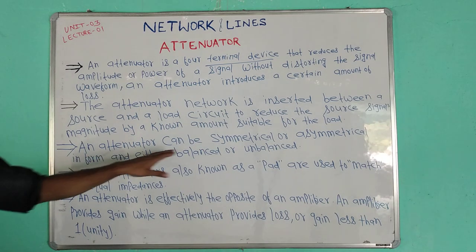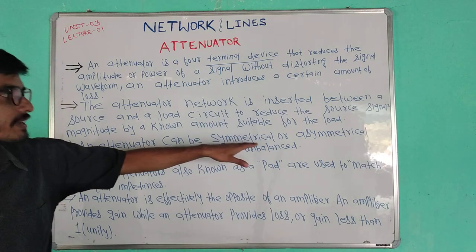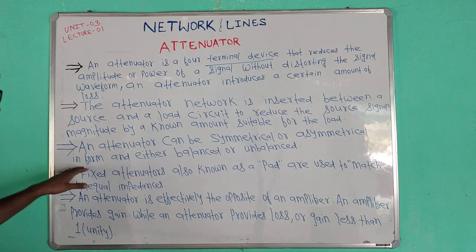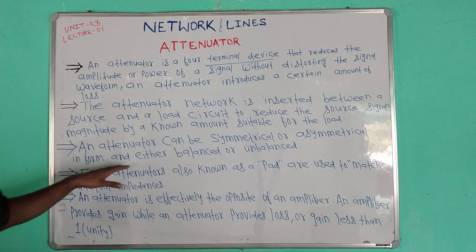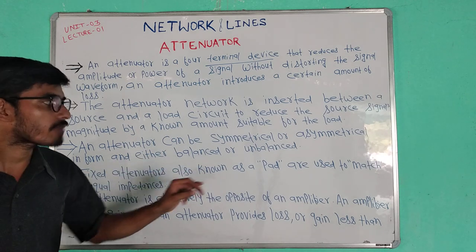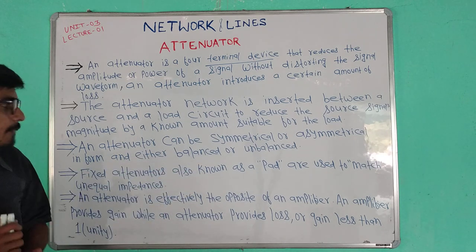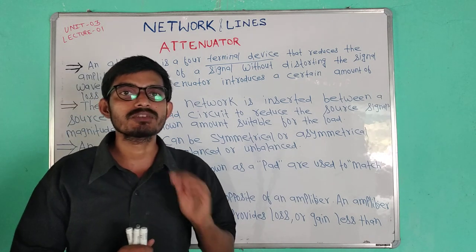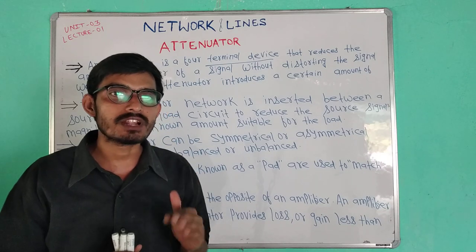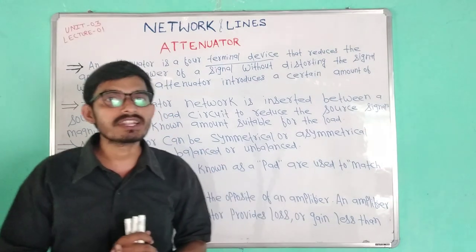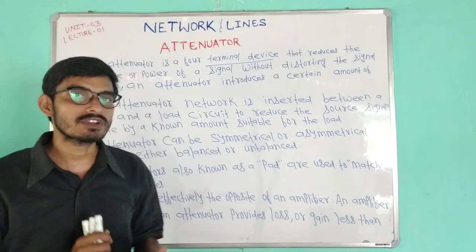An attenuator can be symmetrical or asymmetrical in form, and either balanced or unbalanced. So there are symmetrical attenuators and asymmetrical attenuators.